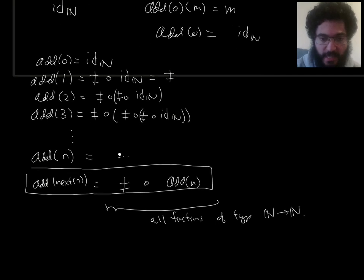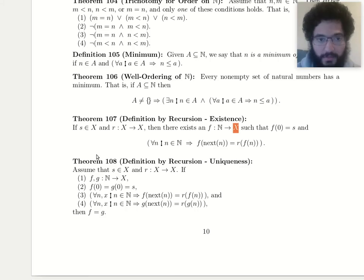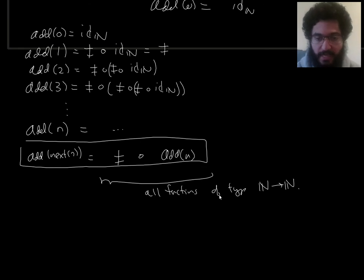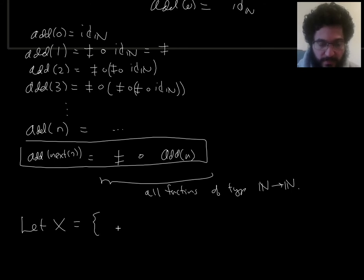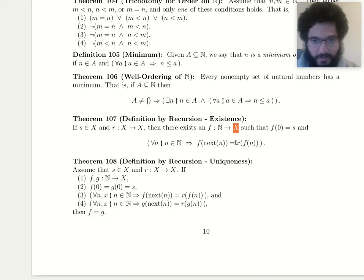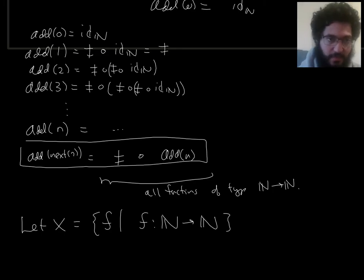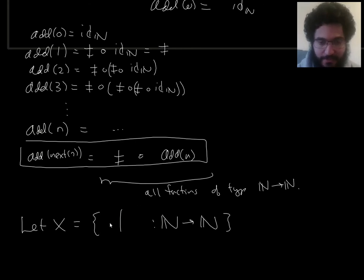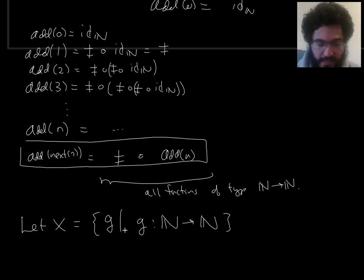What I want for set capital X in applying theorem 107 is for X to be a set of those kinds of things. Let X be the set of all functions g mapping N to N. That's the set of all functions from N to N. I was using f as a bound variable, which would be confusing since f will name the sequence that comes out, so I'll call the bound variable g instead.